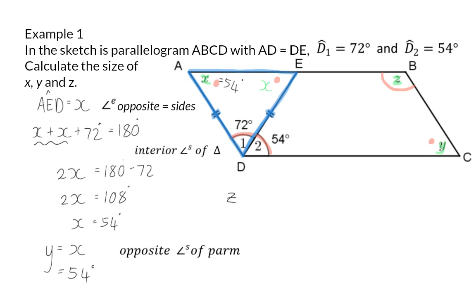I've also mentioned earlier that angle B is equal to D1 plus D2, and that means it is 72 degrees plus 54 degrees, so Z will be 126 degrees, and again my reason is opposite angles of a parallelogram.